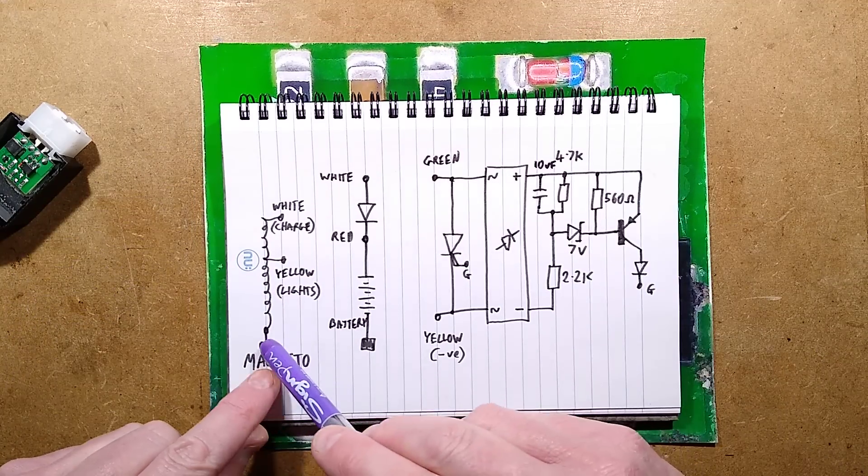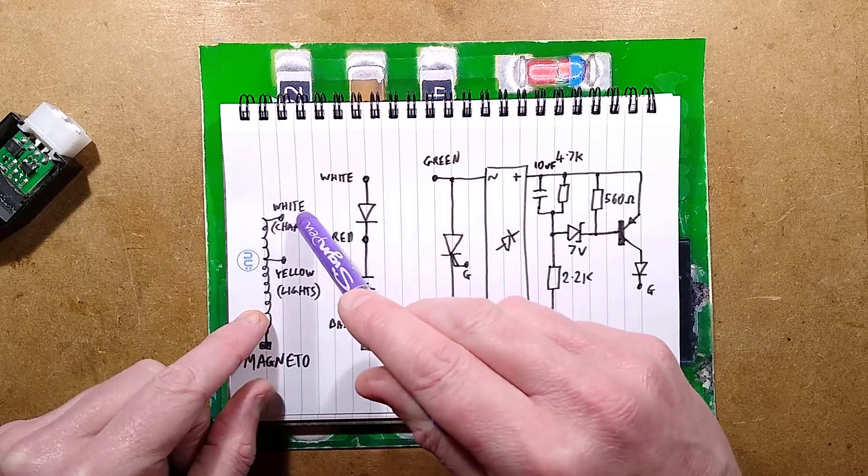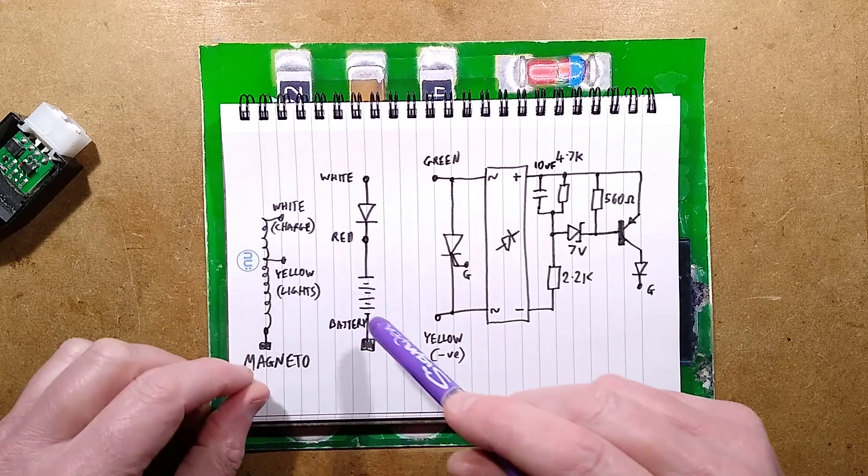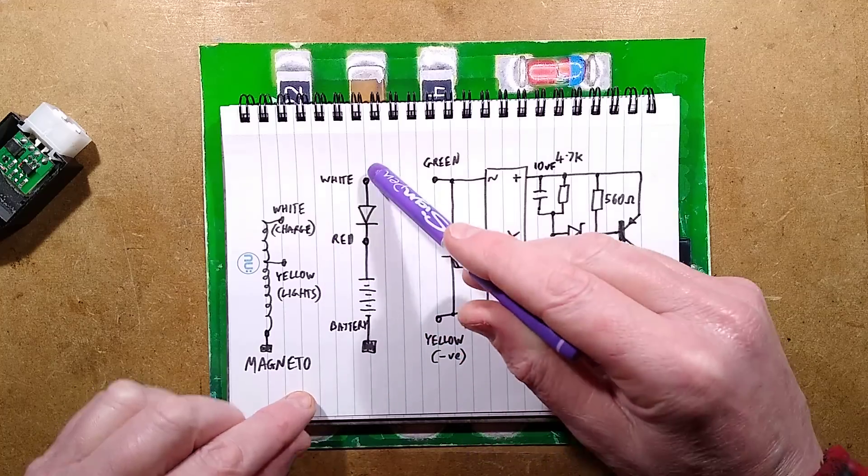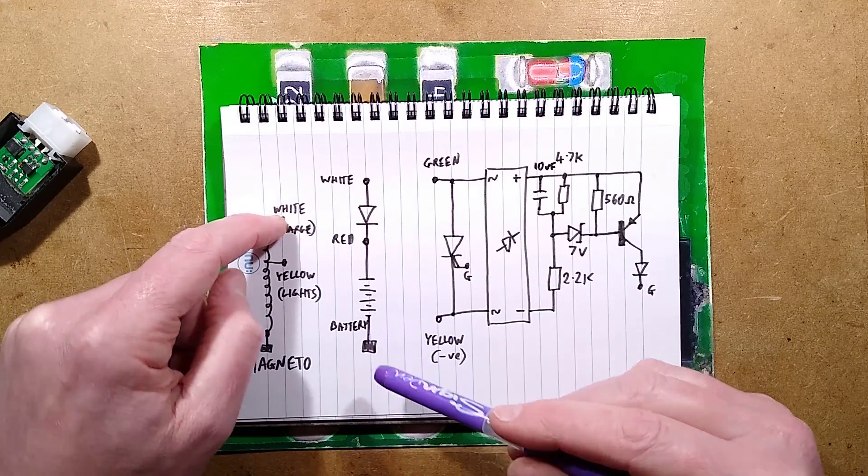Here's the magneto. It has one winding referenced to the chassis. It's got the yellow going to the lights and the white going to charge the battery. Here's what's in that module: it's just a diode between the white and red, so it's charging the battery straight from the white winding via a diode.